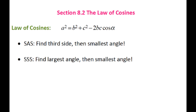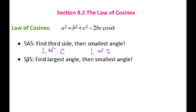For law of cosines, you have two scenarios that you would use this formula with. You have your side-angle-side, and then your side-side-side. If you have side-angle-side, you want to find the third side first using the law of cosines formula, and then find the smallest angle using law of sines. For triangles that give you all three sides, you want to find the largest angle first using law of cosines, and then the smallest angle using law of sines.